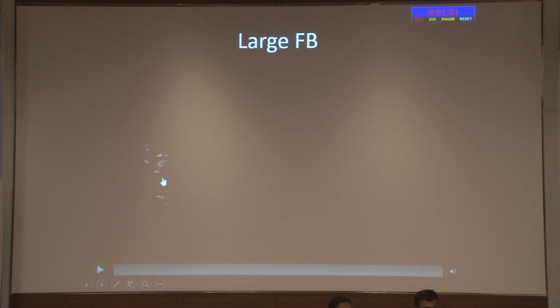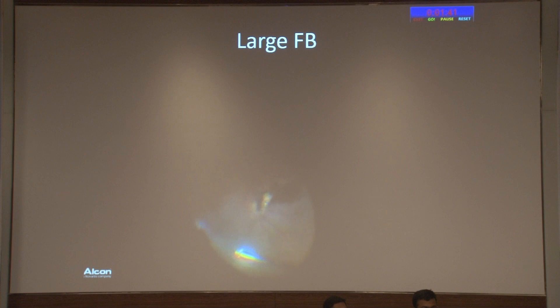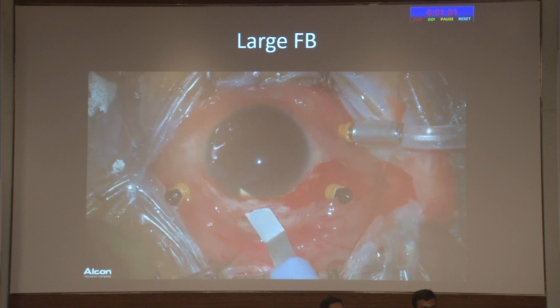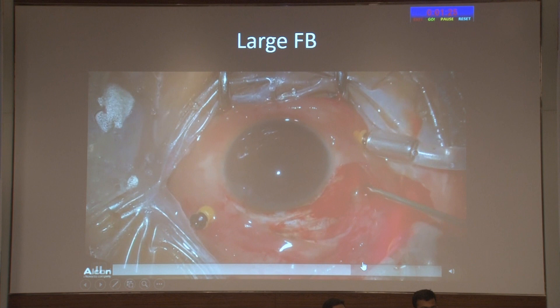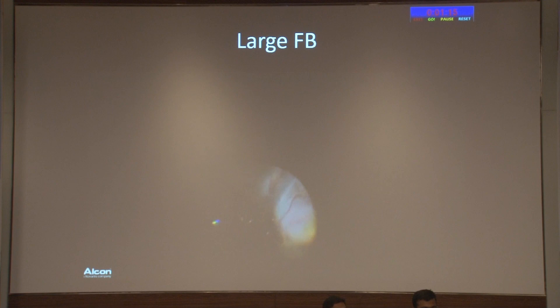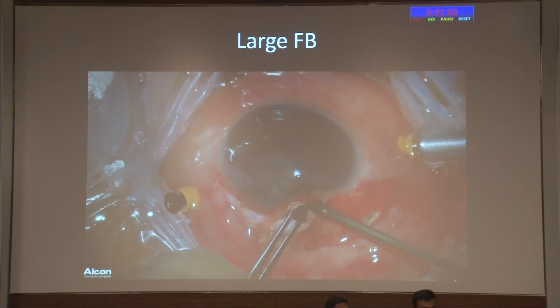Another case involved a large foreign body sitting over the optic disc like a tower. Again, transcleral retrieval was not possible for this foreign body. The lens had to be sacrificed, but with modern vitreoretinal techniques this is not as traumatic as it once was. The foreign body was delivered transpupillarly. While the visual prognosis was poor in this case, at least complications due to metallosis could be prevented by removing it.